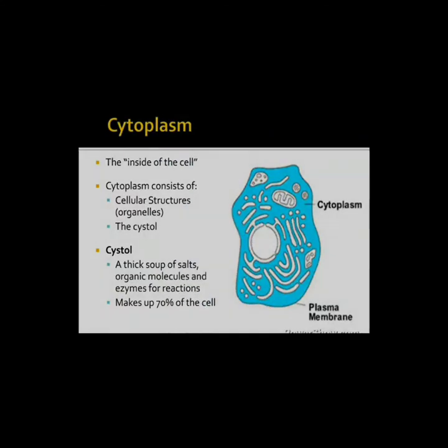Next, cytoplasm. What is the cytoplasm? It is the constituent of the inside of the cell. Cytoplasm consists of cellular structures such as organelles and the cytosol. It is described as a thick soup of salt, organic molecules, and enzymes for reactions — it contains enzymes for reactions and makes up 70% of the cell.